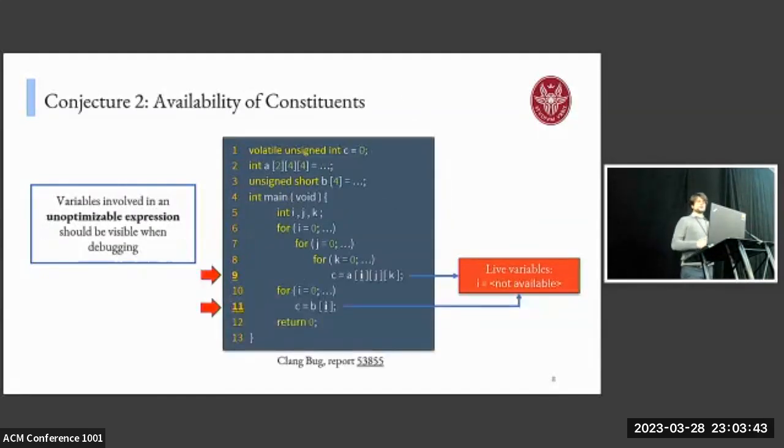The second conjecture is based on the availability of constituents of an expression, and it states that when we have an unoptimizable expression, all the variables involved should be visible. In this example, again from a bug confirmed in the Clang compiler, we have that at line nine and line eleven, the loop induction variable i is used to access a global array but is not available when stepping on these lines. So we cannot know the index at which we are accessing the array during debugging, and this violates our conjecture.